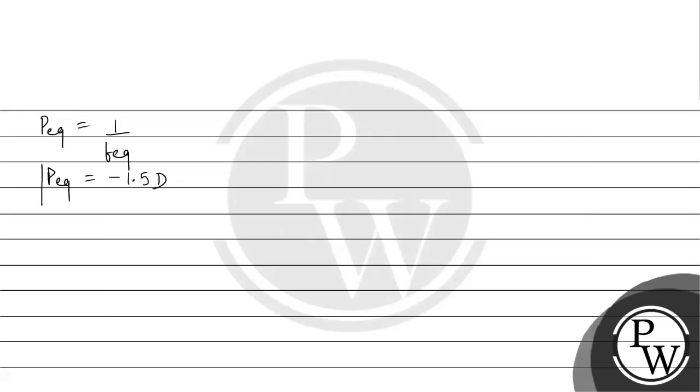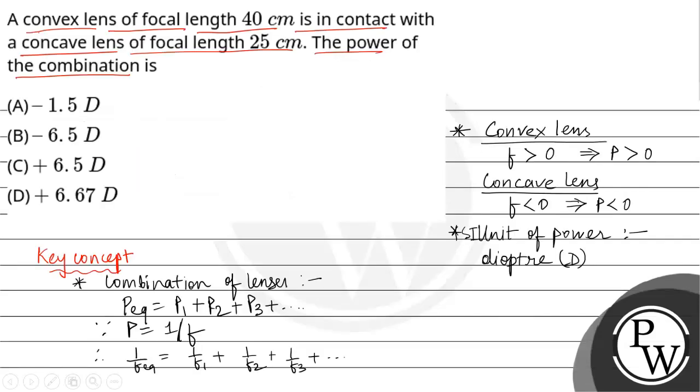This is our final answer. So the final answer for the given question is minus 1.5 diopter. So option A minus 1.5 diopter is correct. Option B minus 6.5 diopter is wrong. Option C plus 6.5 diopter is wrong. Option D plus 6.67 diopter is wrong. So the final answer is minus 1.5 diopter, option A. Thank you.